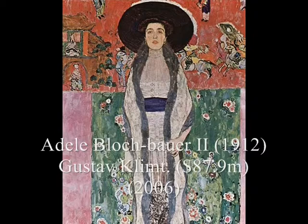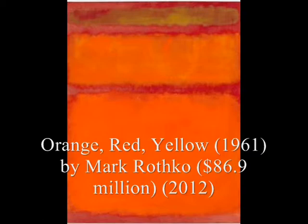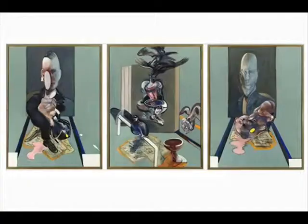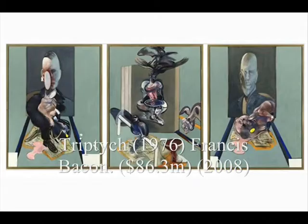Number six: Orange, Red, Yellow, 1961, by Mark Rothko — $86.9 million in 2012. Number seven: Triptych, 1976, by Francis Bacon — $86.3 million in 2008.